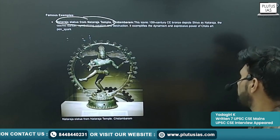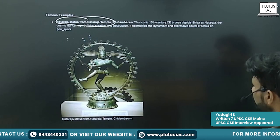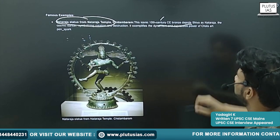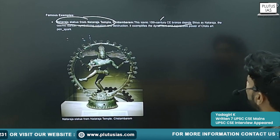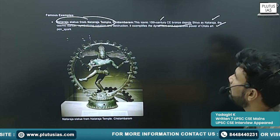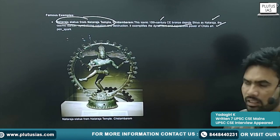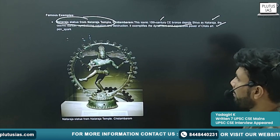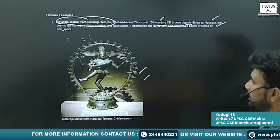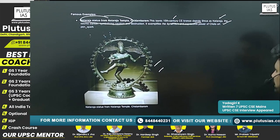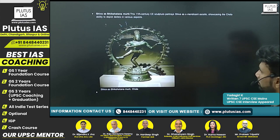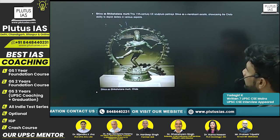Famous examples: the Nataraja sculptures from Nataraja Temple, Chidambaram. This is an iconic 10th century bronze depicting Shiva as Nataraja, the cosmic dancer. In the image you will see the Nataraja from the Chidambaram temple.